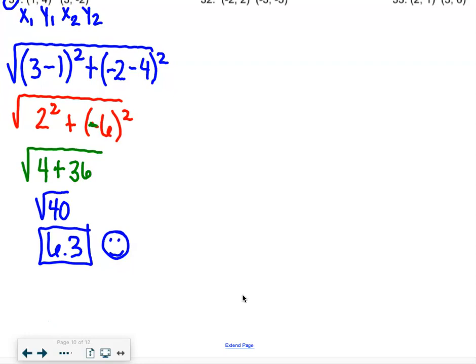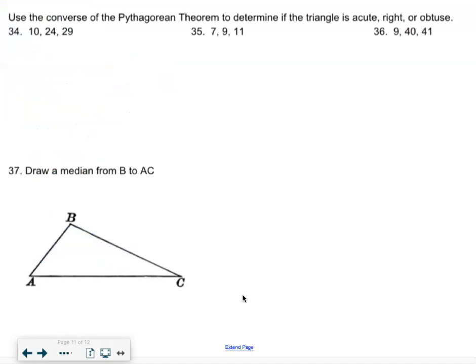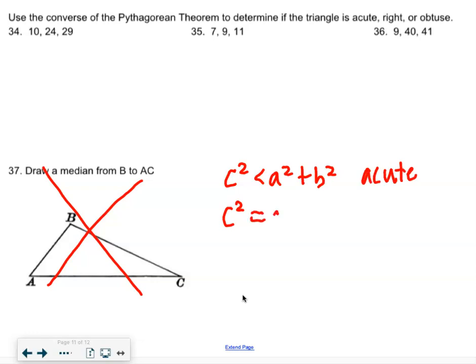Alright folks and our last section says use the converse of the Pythagorean theorem to determine if the triangle is acute right or obtuse. So why don't you guys cross this off we're not doing 37 we never talked about median and then in this blank space let's just write out our three possible options here. So for acute c squared is less than a squared plus b squared. c squared equals a squared plus b squared we know that is a right triangle that's when it works. And then if c squared is greater than a squared plus b squared it is obtuse.